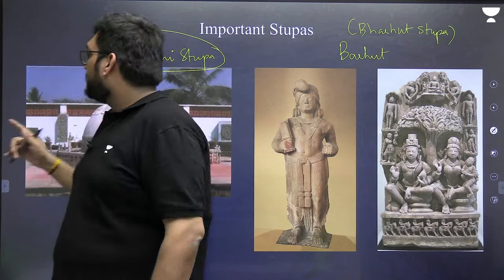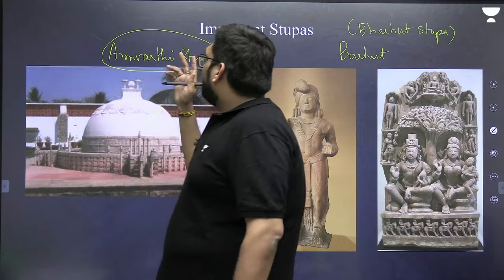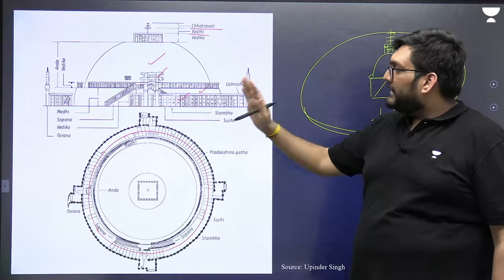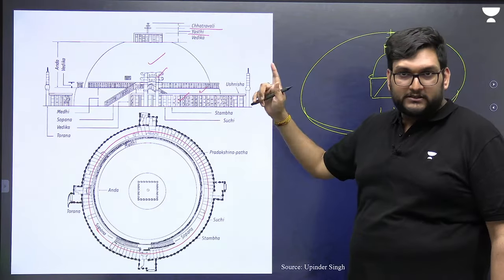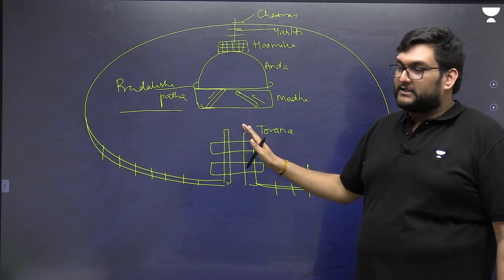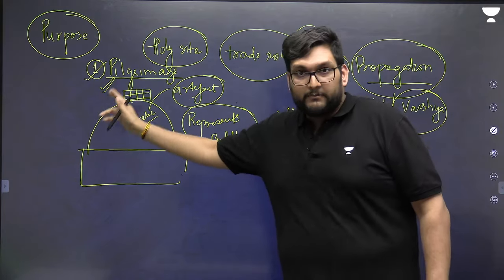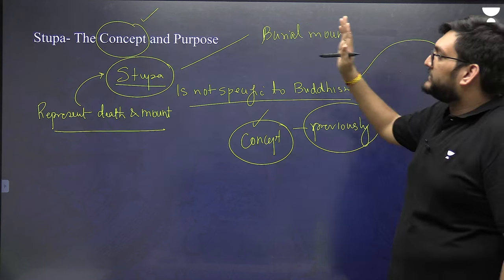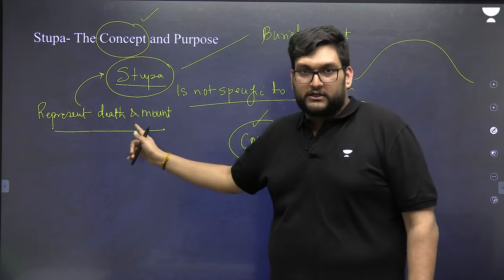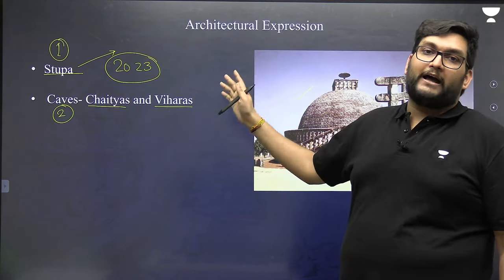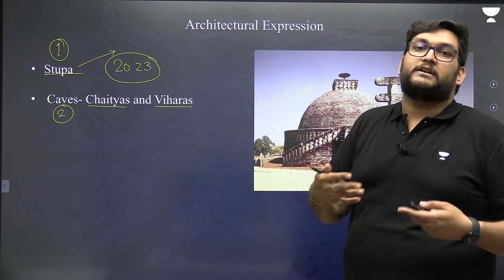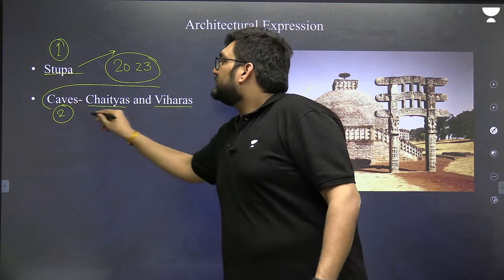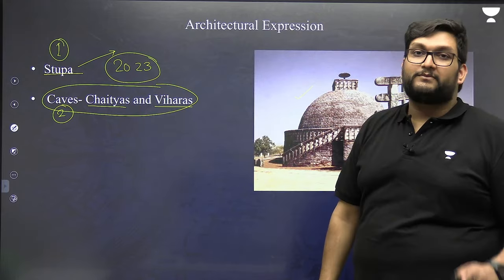To summarize the four stupas you must remember: Amaravati, Bharhut, Sanchi, and Dhamek. We have understood the structure, the purpose — pilgrimage and propagation — and the concept that stupas are not original to Buddhism. Now we move to the second most important concept: Chaityas and Viharas.